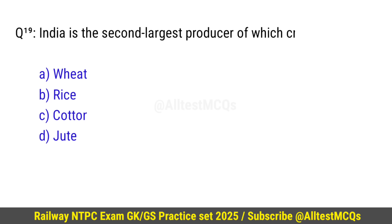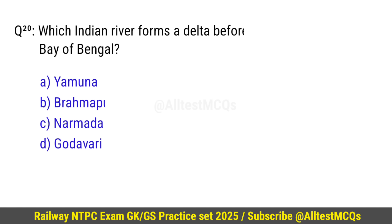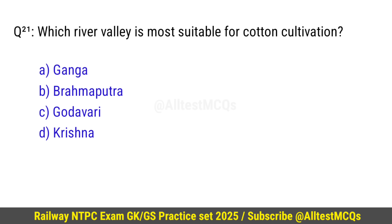Question number 19: India is the second largest producer of which crop? Right option is B — Rice. Question number 20: Which Indian river forms a delta before entering the Bay of Bengal? Correct option is D — Godavari.